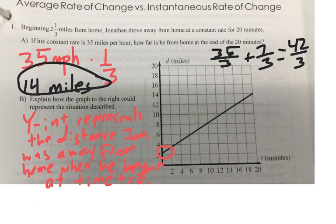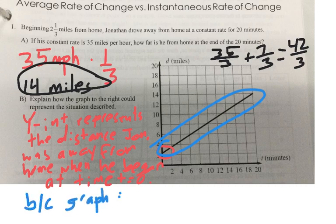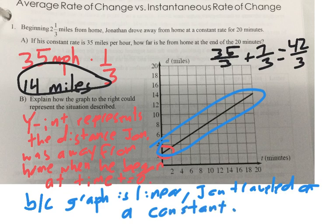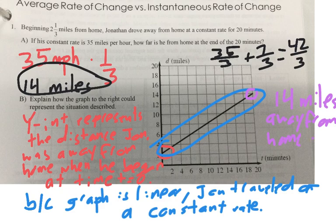We also need to talk about the slope. Because it's a line, it's a constant rate. So because the graph is linear, John traveled at a constant rate. He was 14 miles away from home when time was equal to 20 minutes.